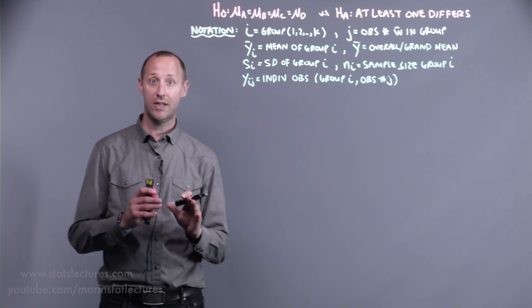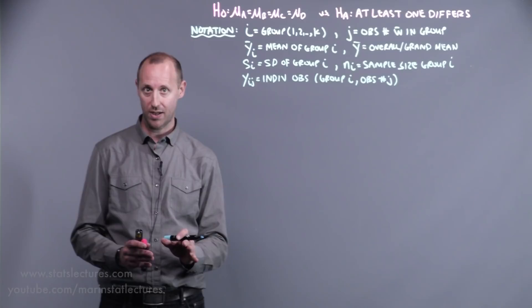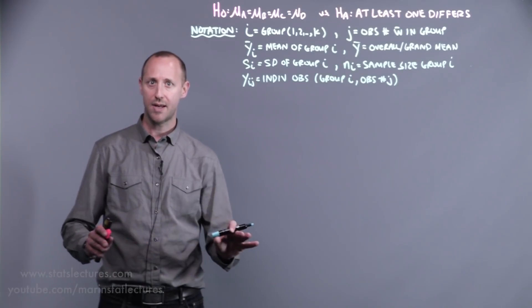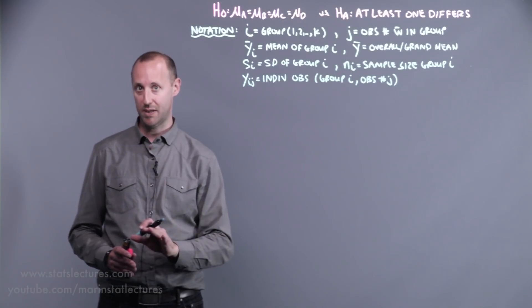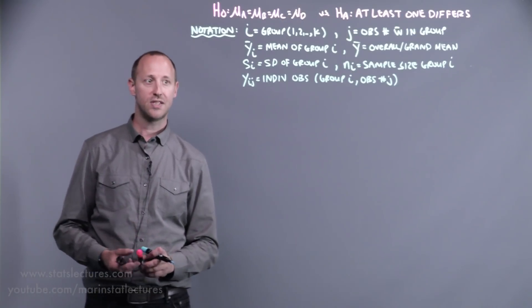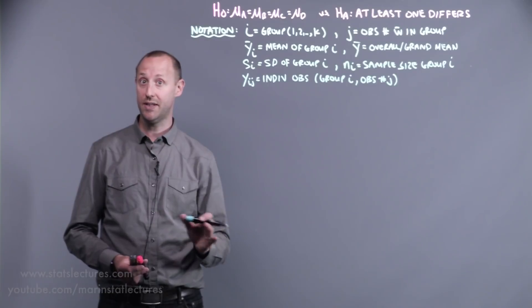We previously talked about how we can take the total variability in weight loss, or the total sum of squares, and separate it into two parts. That which is explained by the diet, and that which is not explained by the diet.